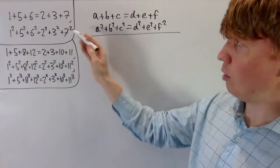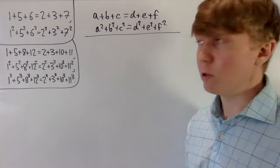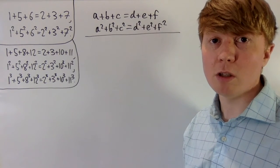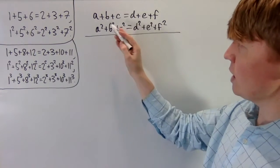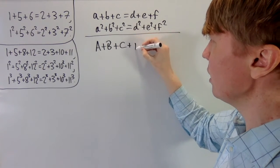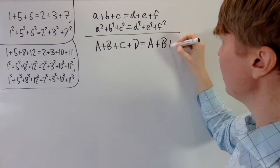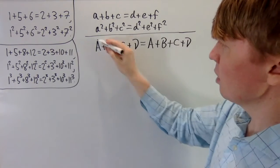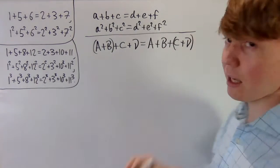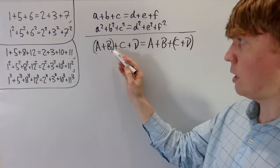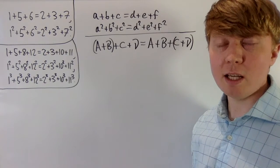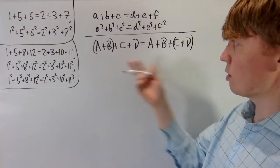Our first step is choosing six integers where we can split them so that three have the same sum as another three. A nice way to generate six such integers — and this is probably the most elegant step — is to note that A plus B plus C plus D equals itself. We can group these as (A+B), C, and D on one side, and A, B, and (C+D) on the other. As long as A+B isn't equal to C or D, and C+D isn't equal to A or B, we get six distinct integers whose split sums are equal.